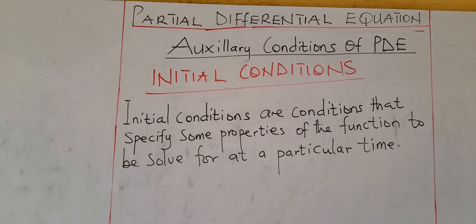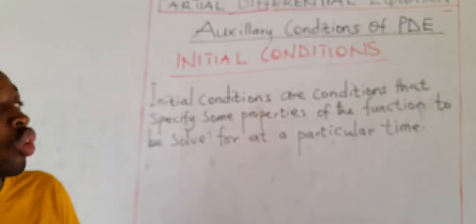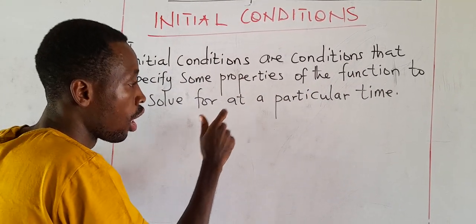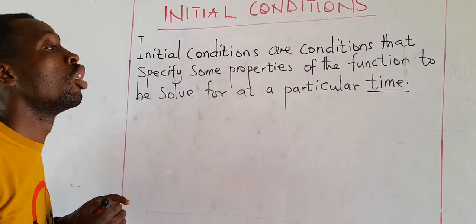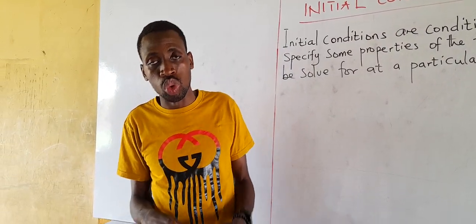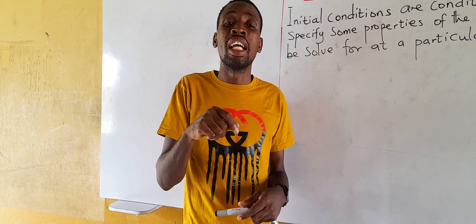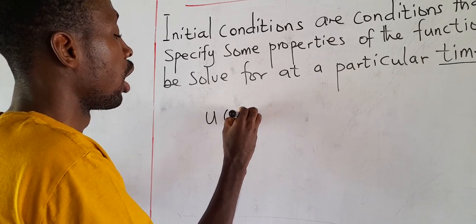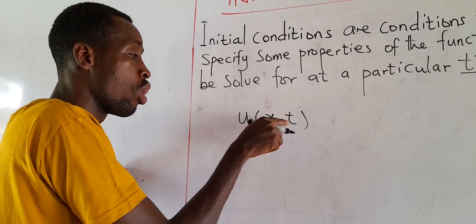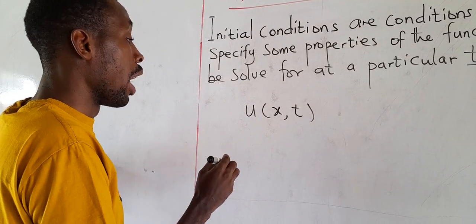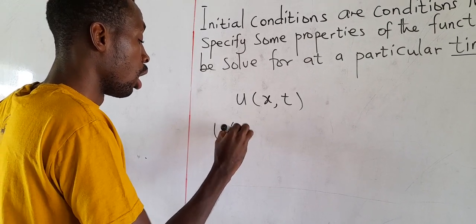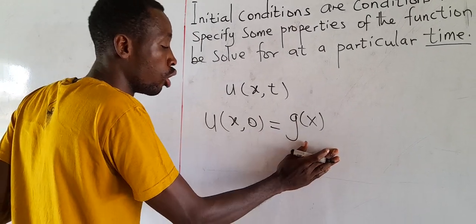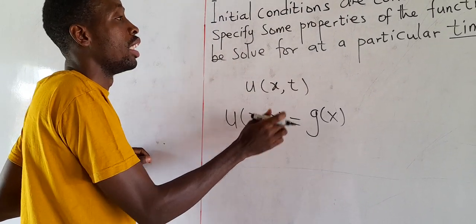We start with initial conditions. An initial condition is a condition that specifies some properties of the function to be solved for at a particular time. If a condition given to a PDE is subjected to a time variable — for instance, u(x, 0) = f(x), where t = 0 — then that condition is called an initial condition.